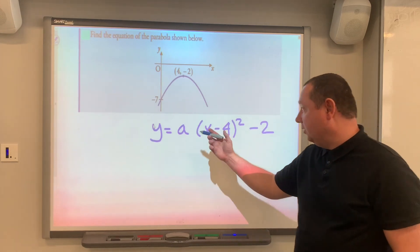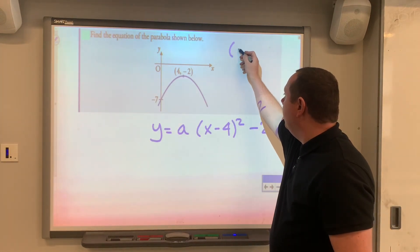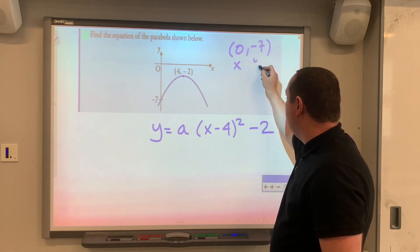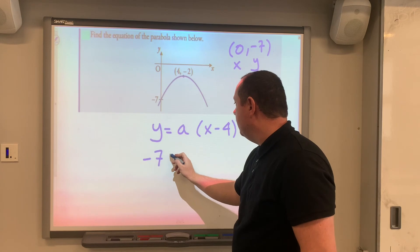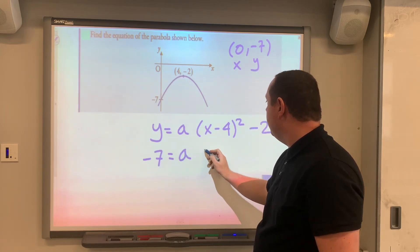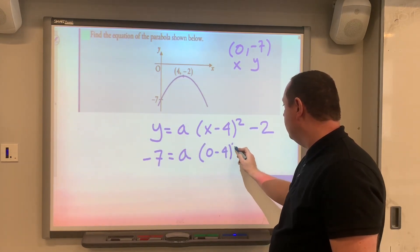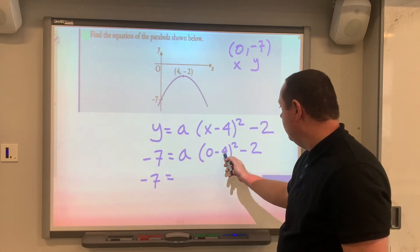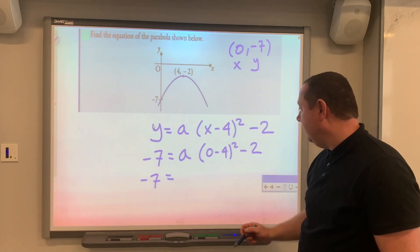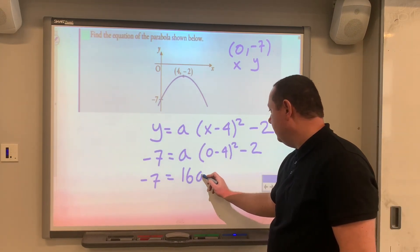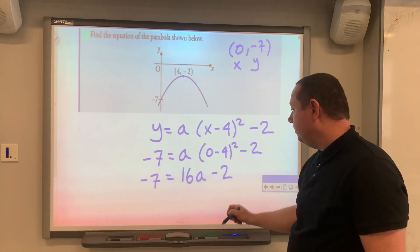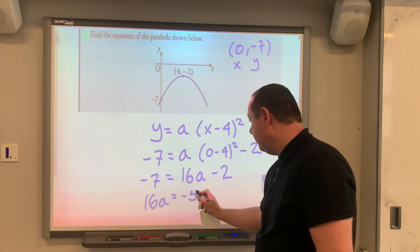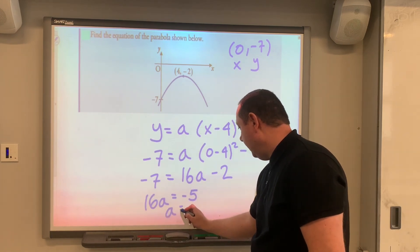So we could substitute in our other point to get a. We've got the point (0,-7), so that's my x and that's my y. So -7 must equal a(0 minus 4) squared minus 2. -7 equals, well, 4 squared is 16, so 16a minus 2. 16a then must be -5, and a must be -5 over 16.